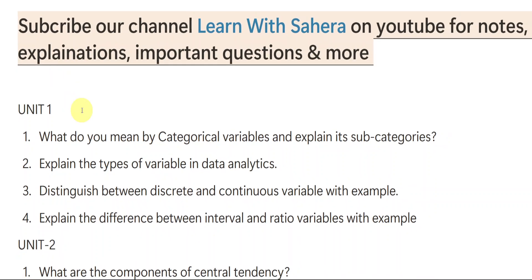From unit number one, the first important question is: What do you mean by categorical variables and explain its subcategories? Second: Explain the types of variables in data analytics. Third: Distinguish — meaning differences — between discrete and continuous variables with example. Whenever examples are mentioned you need to write them, otherwise marks will be deducted. Fourth: Explain the difference between interval and ratio variables with example.